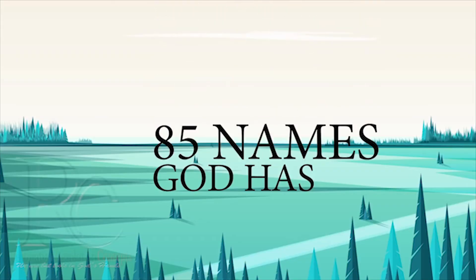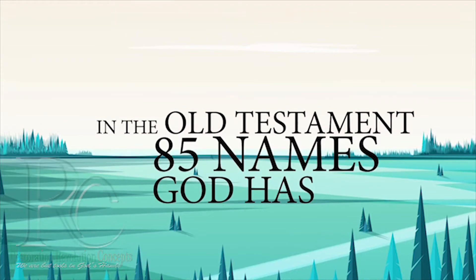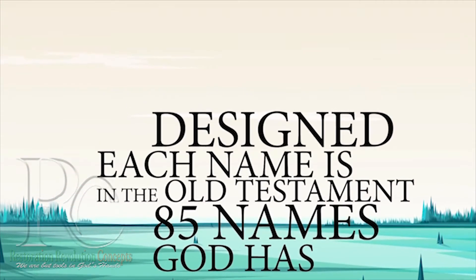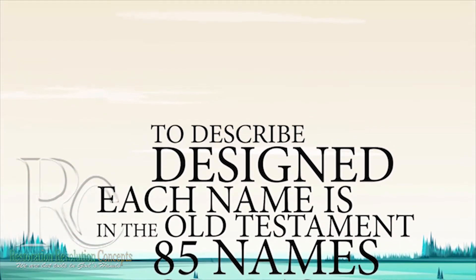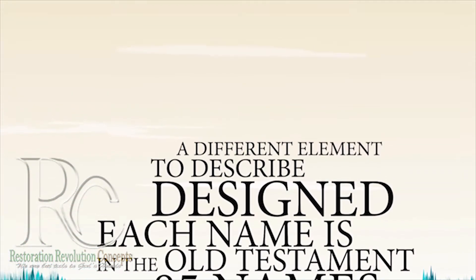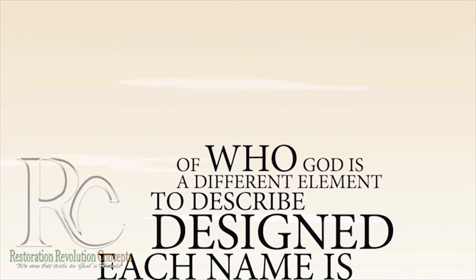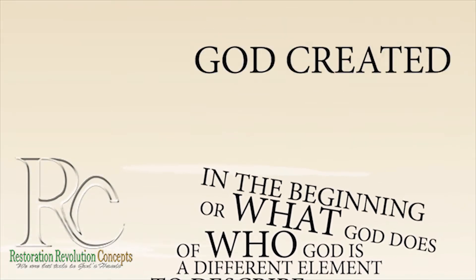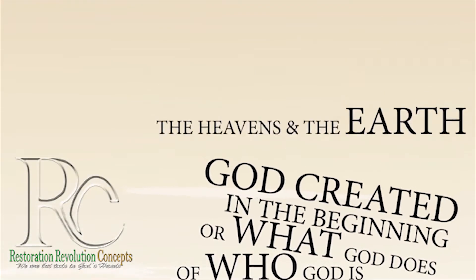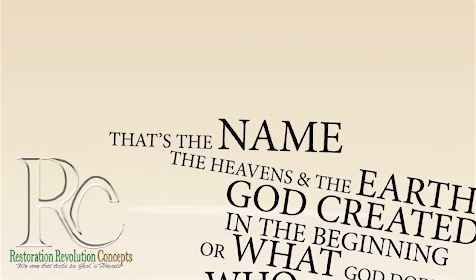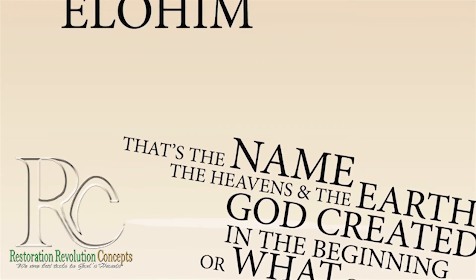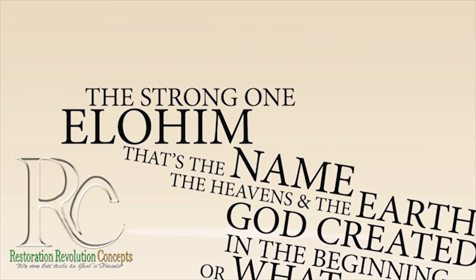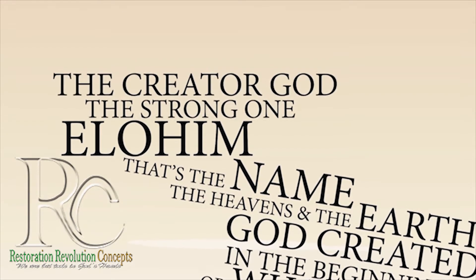God has 85 names in the Old Testament. Each name is designed to describe a different element of who God is or what God does. In the beginning, God created the heavens and the earth — that's the name Elohim, the strong one, the creator God.